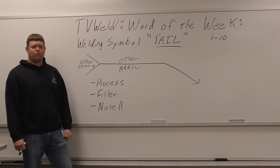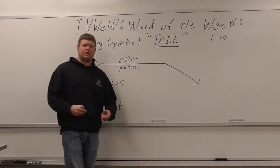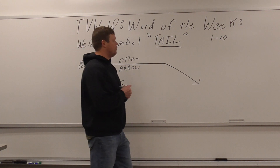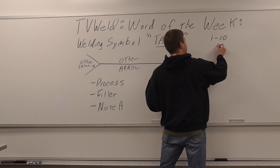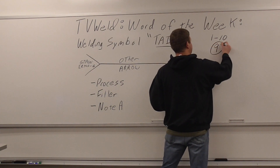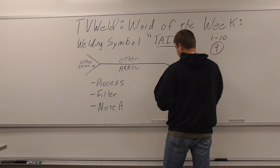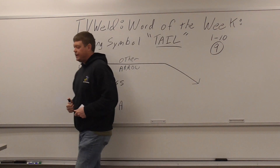On a scale of 1 to 10 — 1 being not that big of a deal, 10 being a huge deal — if you don't know what a tail is and you're in the welding world, it's probably about a 9. It's pretty important. You need to know what the tail is.